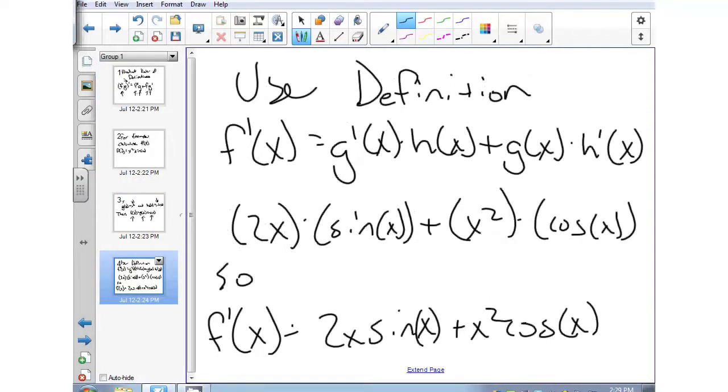Then we're going to use the definition. So we're going to say f prime of x equals g prime of x times h of x plus g of x times h prime of x.